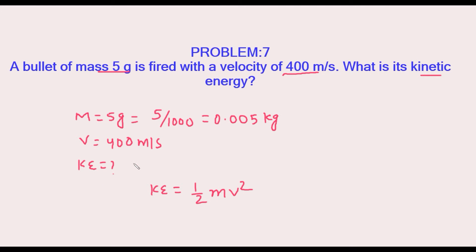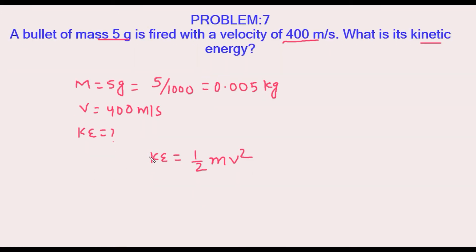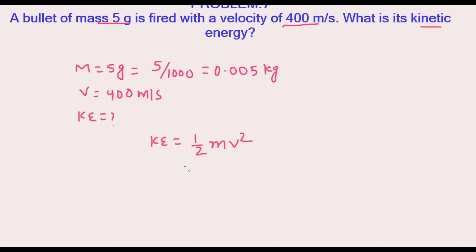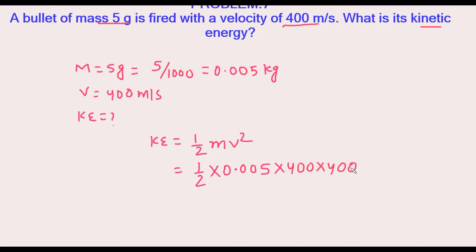Velocity is already given in meters per second, so that is fine. Kinetic energy equals one-half into 0.005 into 400 into 400. V squared means we multiply v twice. Solving this gives us 400, and the unit of energy is joule. So the required kinetic energy is 400 joule.